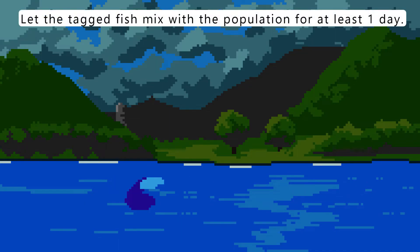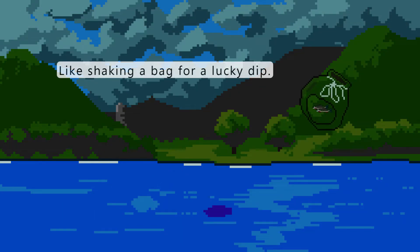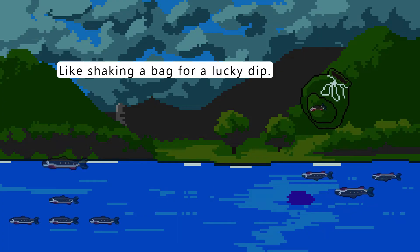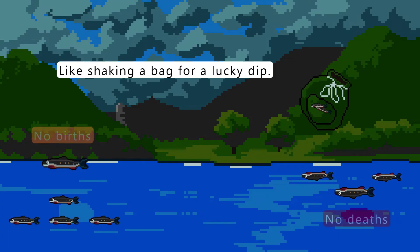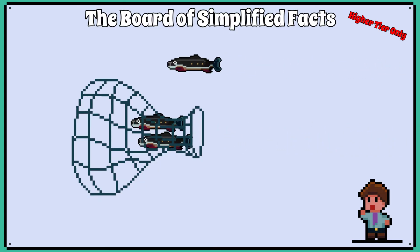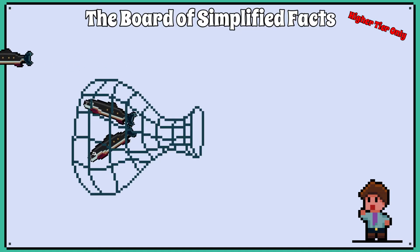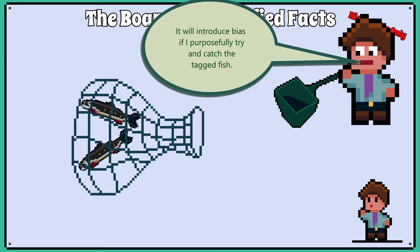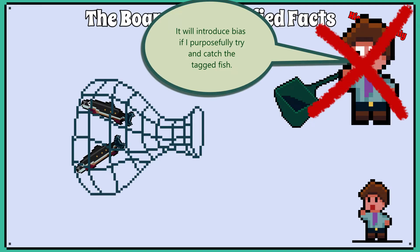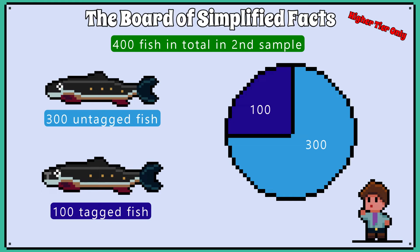At least a day should pass before we start recapturing. The idea is that we want these marked fish to mix with the rest of the population, but we should not leave it too long to avoid more fish being born or killed and messing with our estimate calculation. The recapture method needs to be random — fishing with nets is random enough. We should not be trying to recapture any of the marked fish on purpose, otherwise we will introduce bias. When we go to recapture them, we capture about 400 fish, and of those, 100 are marked with a tag from the previous capture.